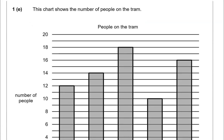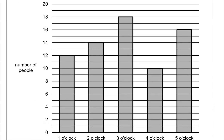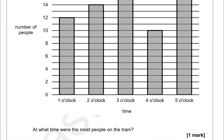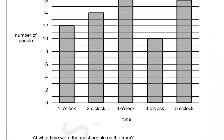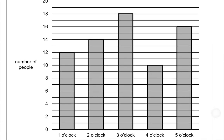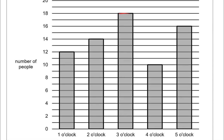This chart shows the number of people on the tram. At what time were the most people on the tram? Looking at the bars, which one is the highest? It's this one here, so that is at 3 o'clock.